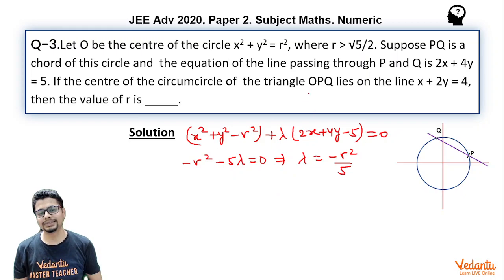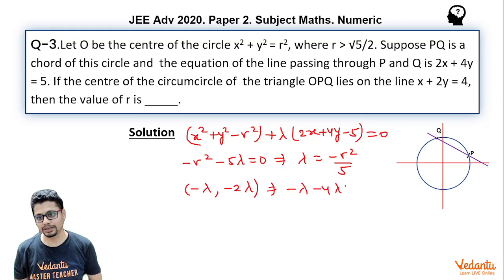Also it is given that the center of the circumcircle lies on the line x + 2y = 4. Using the basic concepts of equation of circle, the center of this general circle is (-λ, -2λ) and this is supposed to lie on this line x + 2y = 4. That means this should satisfy this equation. That essentially means -λ + 2(-2λ), that means -4λ = 4, or we can say λ = -4/5.